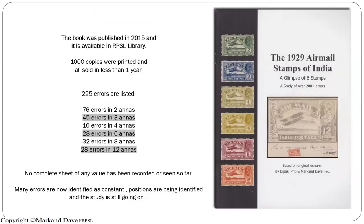I also published a book jointly with my father and sister, which is in the Royal Library at the moment. I printed one thousand copies in 2015 — all sold within one year. 225 errors are listed with statistics. I was then continuously researching whether the errors I discovered could be confirmed with multiple blocks to prove they are constant.